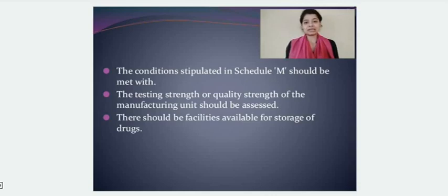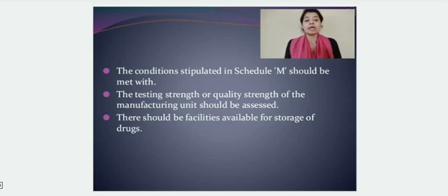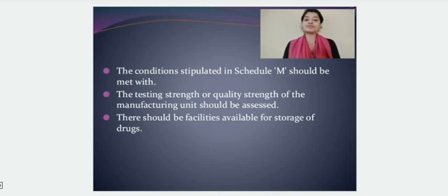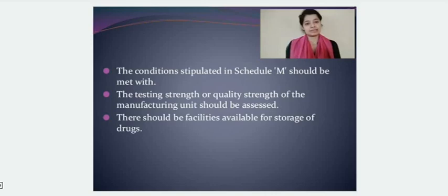Along with competent staff, the conditions stated in Schedule M should also be fulfilled. Schedule M basically refers to Good Manufacturing Practices and provides guidelines for the proper manufacturing of drug products so that the quality of the drug is maintained. The testing strength and quality strength of the manufacturing unit should be assessed before filing an application, and there should be adequate facility for the proper storage of drugs under proper conditions.